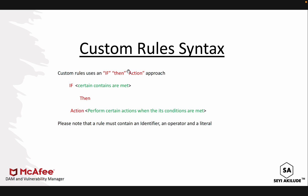Let's go deeper into the custom rules syntax. Custom rules use an if-then approach in creating the rule itself. The if-then states that if certain conditions are met, then perform specific actions. For example, if the request is coming from a particular IP address, then allow or deny that particular request. This is the overview of how the rule syntax works, and it's very important that we understand this because as you begin to write more complex custom rules, this is the basic foundation.